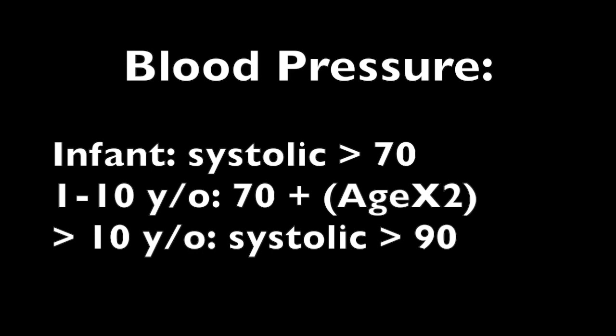When it comes to blood pressure, that changes a little bit in children. For an infant, you want the systolic to be greater than 70. Between 1 and 10, use the formula: age times 2 plus 70. So a 5-year-old: 5 times 2 is 10, so you want systolic greater than 80. And if they are 10 years and older, you want systolic to be greater than 90.